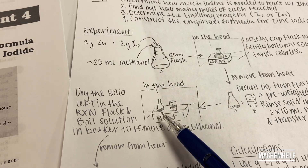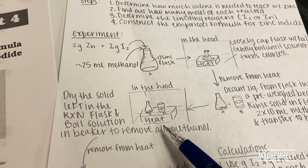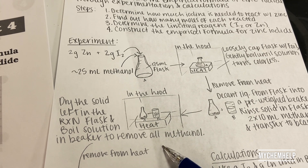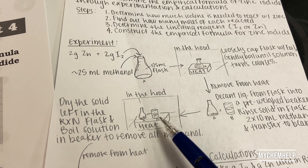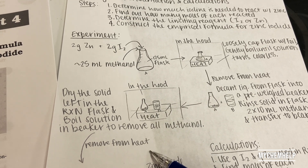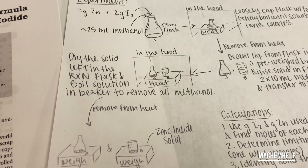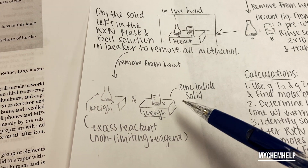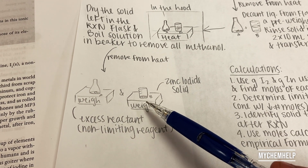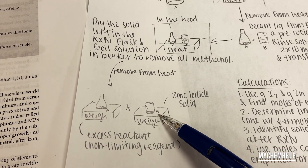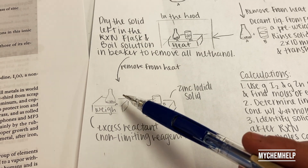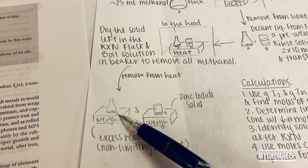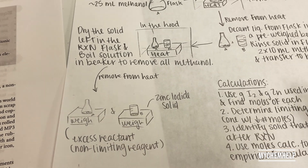Back inside the hood, heat both containers for quite some time to evaporate off all the methanol so we can get an accurate measurement. The zinc solid will be in the beaker labeled B, and the excess reagent is going to be left in the flask.